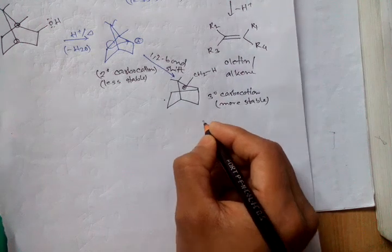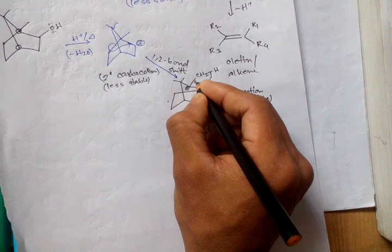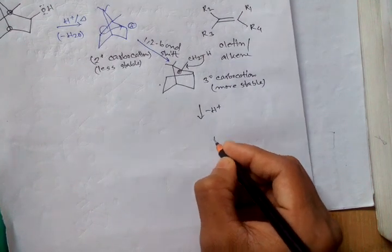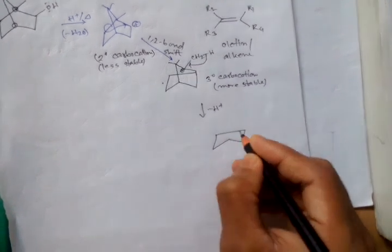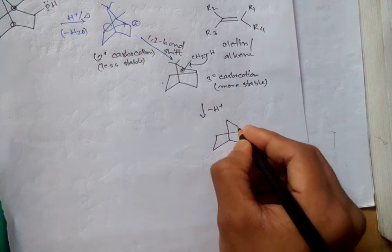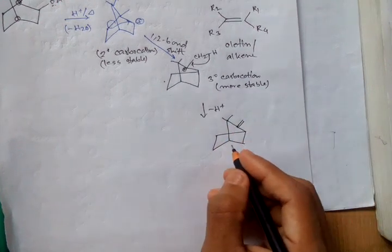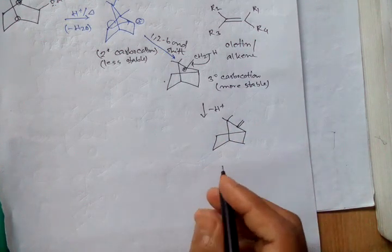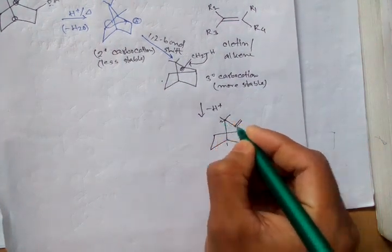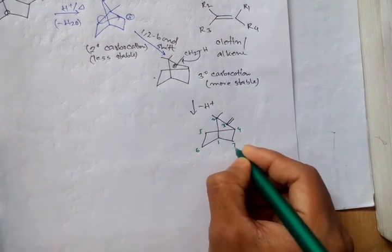So after removing H+, then when it comes here, we get a product like this. If we are numbering this system, that is here it is 1, 2, 3, 4, 5, 6 and 7. It is V1.